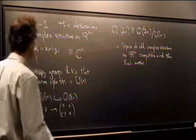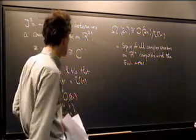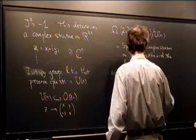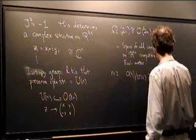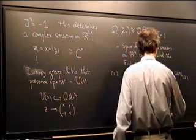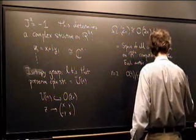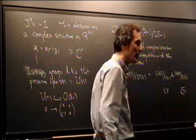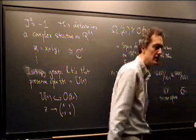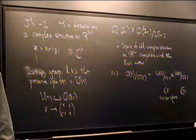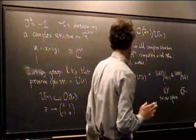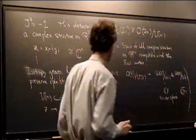This space has the interpretation as the space of all complex structures on R^{2N} compatible with the Euclidean metric. If we took N=2, then we'd have O(4) mod U(2), which is two copies of SU(2) mod U(1), which is CP^1. This is known as the twistor sphere. In four dimensions, there's a sphere's worth of complex structures on R^4, with two components corresponding to two orientations.